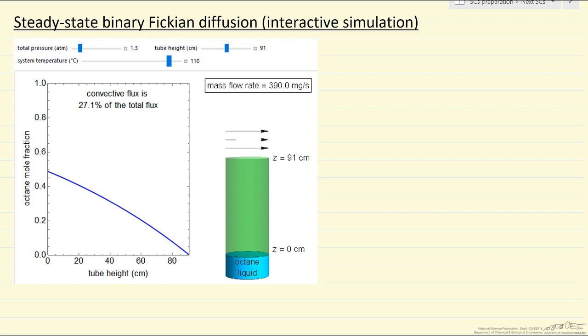This interactive simulation models diffusion of octane through a stagnant layer of air. At the bottom is liquid octane. We're assuming that here we have vapor liquid equilibrium and so the pressure of octane immediately above the liquid is equal to its saturation pressure.